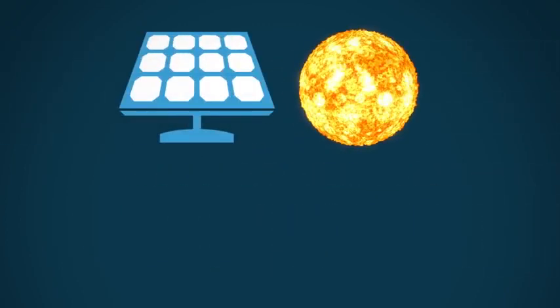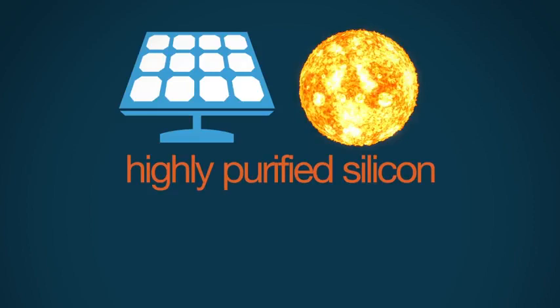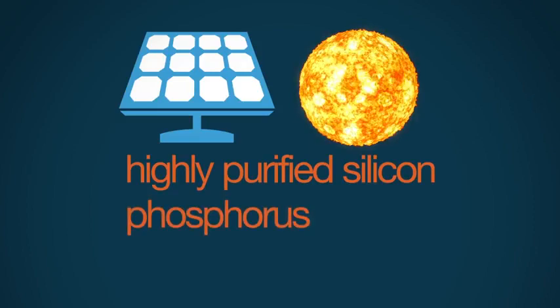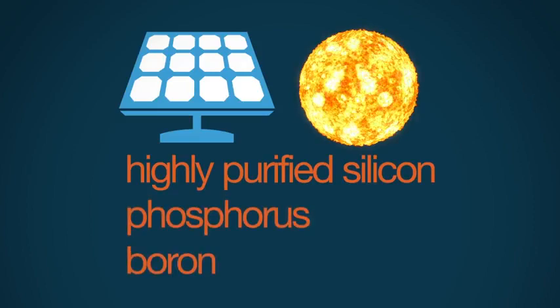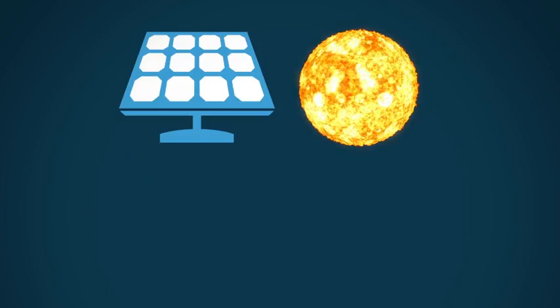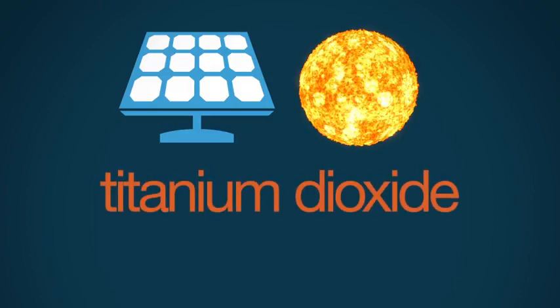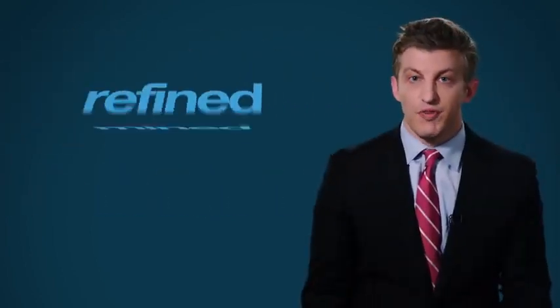The diluteness problem is that, unlike coal or oil, the sun and the wind don't deliver concentrated energy, which means you need a lot of additional materials to produce a unit of energy. For solar power, such materials can include highly purified silicon, phosphorus, boron, and a dozen other complex compounds like titanium dioxide. All these materials have to be mined, refined, and or manufactured in order to make solar panels. Those industrial processes take a lot of energy.